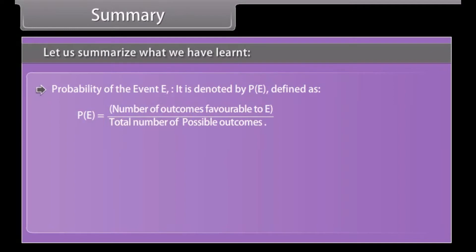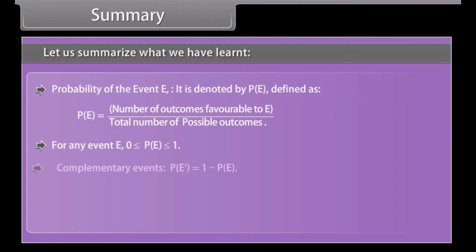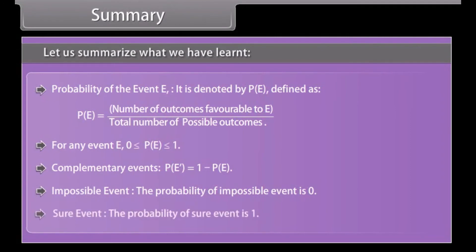Summary: P(E) = number of outcomes favourable to E divided by total number of possible outcomes. For any event E, 0 ≤ P(E) ≤ 1. Complementary events: P(not E) = 1 − P(E). Impossible event: P = 0. Sure event: P = 1.